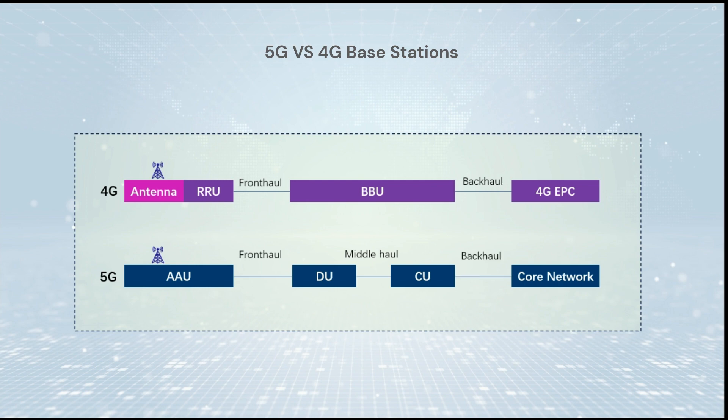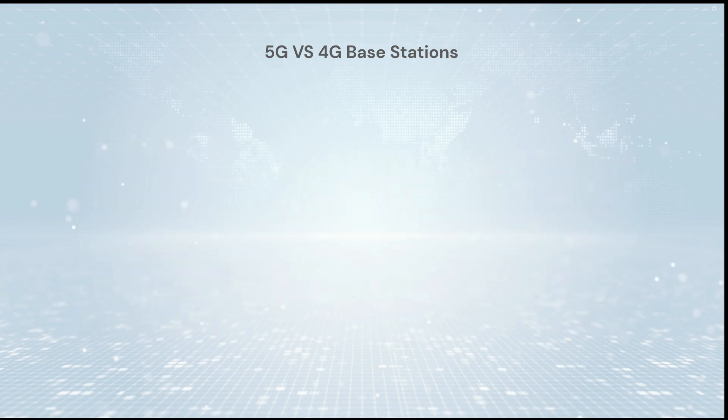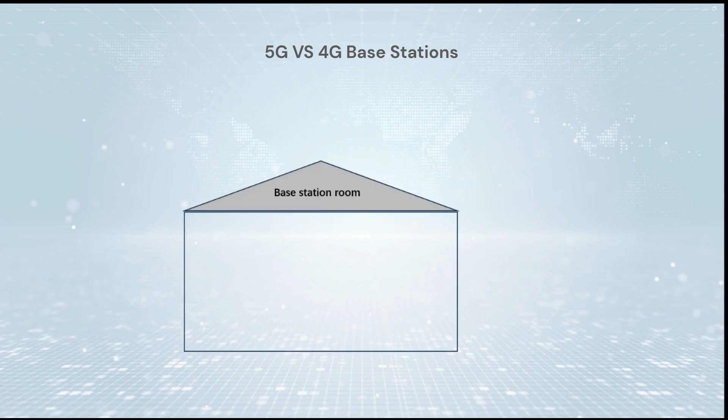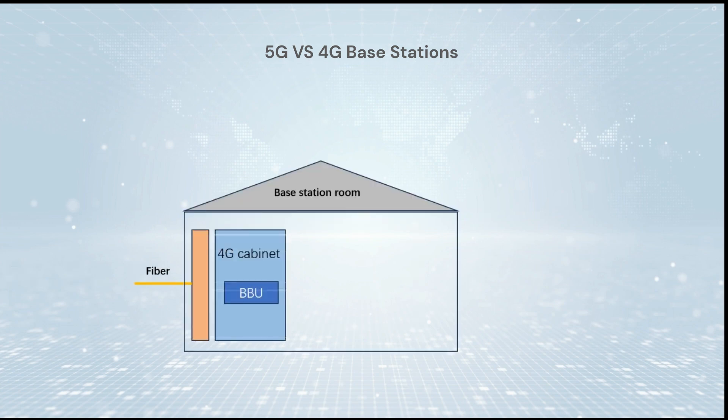4G has a front haul and back haul, whereas 5G is divided into three parts: front haul, mid haul, and back haul. This provides an intuitive architecture comparison for 4G and 5G networks.